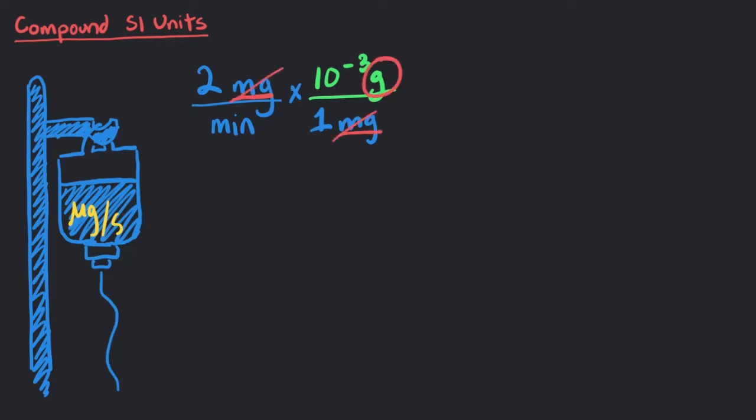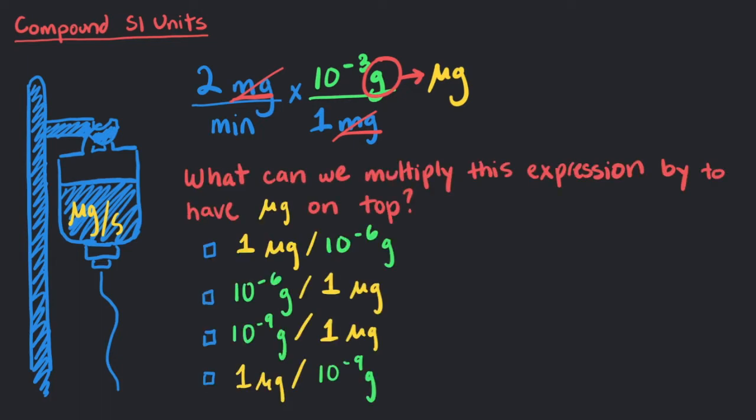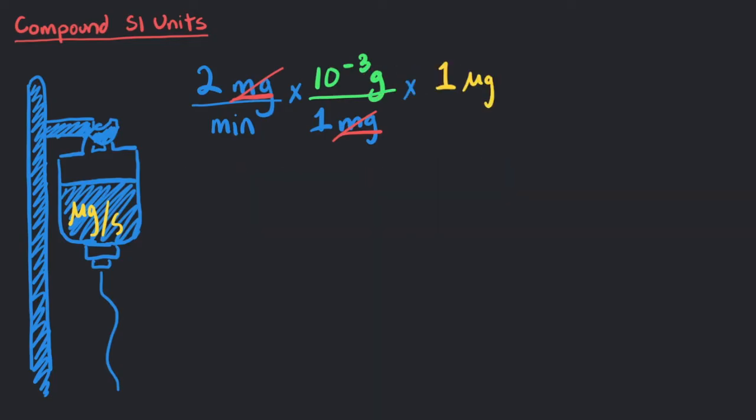Next, we can change the grams to micrograms. What can we multiply this expression by to have micrograms on top? 1 microgram is 10 to the negative 6 grams. So if we multiply this expression by 1 microgram over 10 to the negative 6 grams, we can get rid of the grams on both the top and the bottom. This leaves us with our desired units of micrograms on top. But we won't solve it just yet.